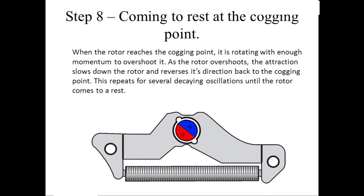Step 8: Coming to rest at the cogging point. When the rotor reaches the cogging point, it is rotating with enough momentum to overshoot it. As the rotor overshoots, the attraction slows down the rotor and reverses its direction back to the cogging point. This repeats for several decaying oscillations until the rotor comes to rest.